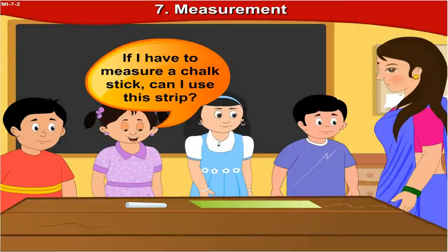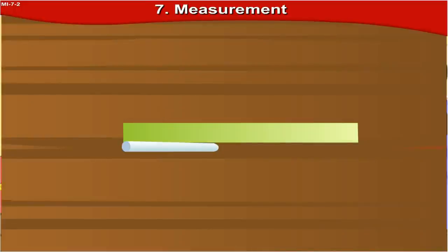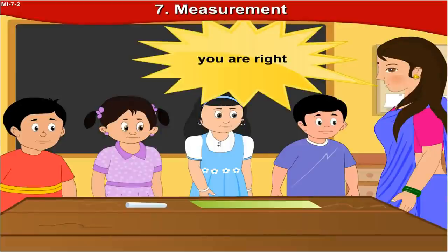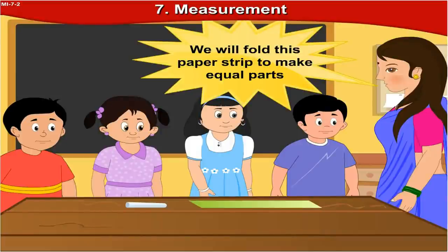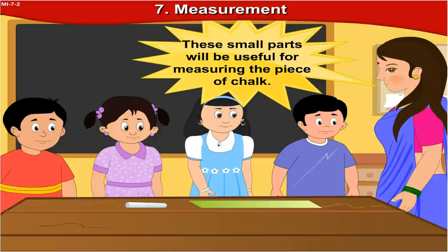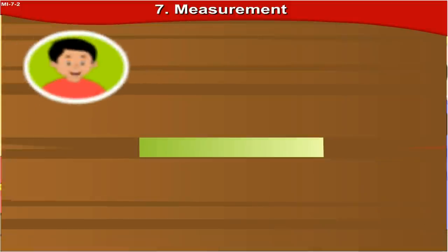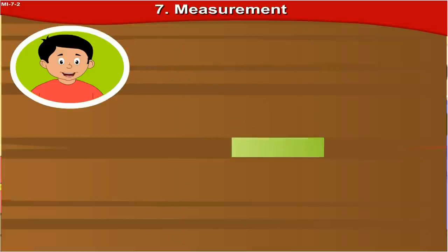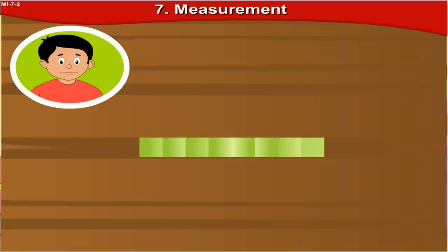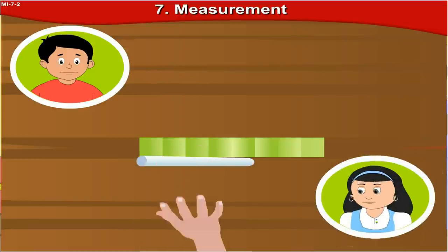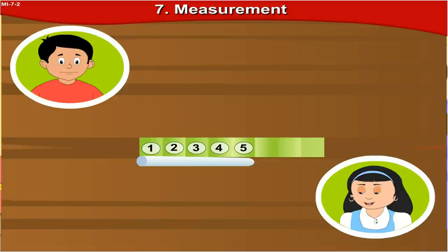If I have to measure a chalk stick, can I use this strip? This strip is longer than a chalk stick. We will fold this paper strip to make equal parts. These small parts will be useful for measuring the piece of chalk. Let me fold this strip three times and I get 8 equal parts. I will place the chalk along the paper strip. This chalk is equal in length to 5 of these small parts.